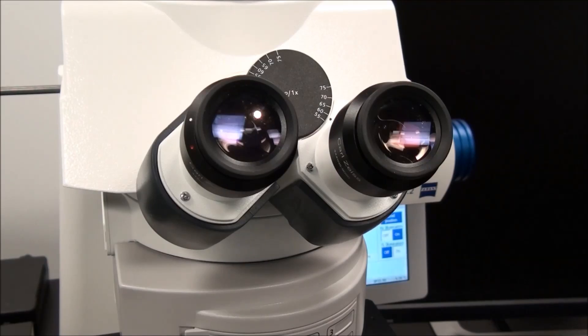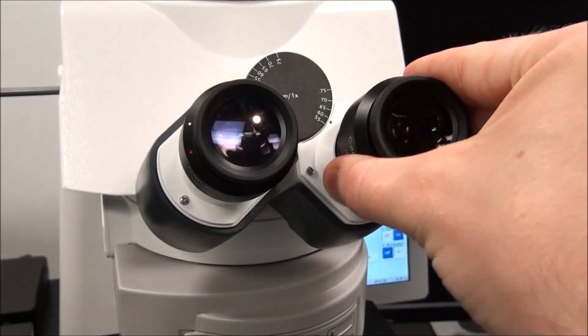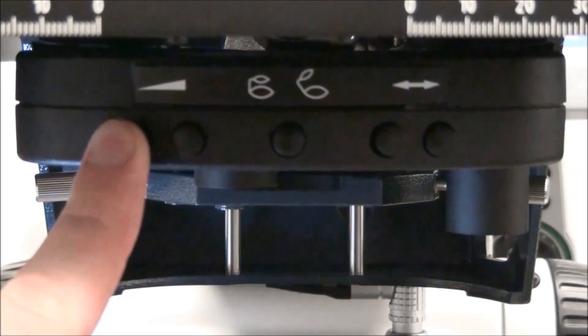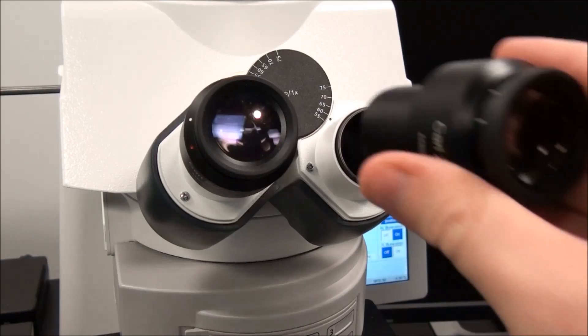Step 11: Remove one eyepiece. Step 12: While looking down the binocular tube, close the aperture diaphragm, located on the condenser, to about two thirds the size of the illuminated view. Replace the eyepiece when complete.